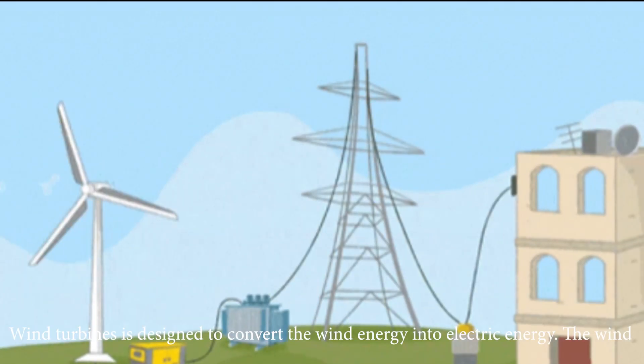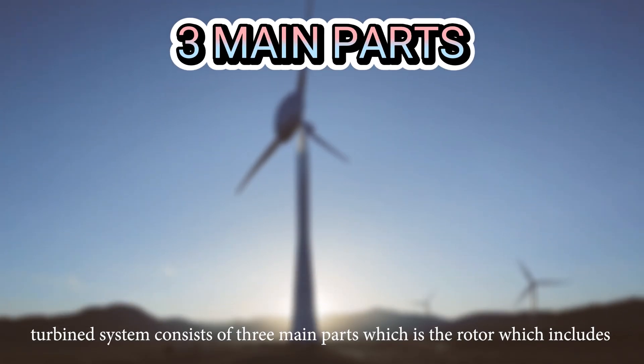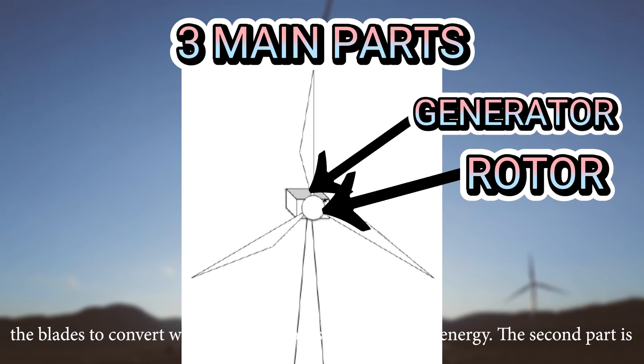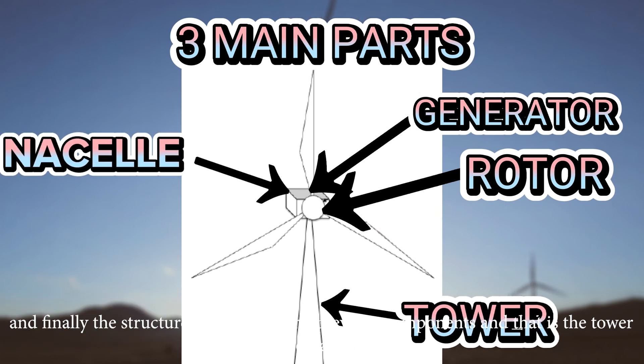Wind turbines are designed to convert wind energy into electric energy. The wind turbine system consists of three main parts: the rotor, which includes the blades to convert wind energy to low-speed rotational energy; the generator, which includes the electrical generator with control circuits and gearbox that convert the low-speed rotation into electric power; and finally the structure, which holds all the previous components, that is the tower and nacelle.